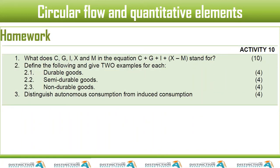We end the lesson with an activity. Question 1: What do C, G, I, X, and M in the equation C + G + I + X − M stand for? Question 2: Define durable, semi-durable, and non-durable goods and give two examples each. Question 3: Distinguish between autonomous consumption and induced consumption (4 marks). This brings us to the end of our lesson — thank you so much for joining, don't forget to subscribe to the YouTube channel. God bless.